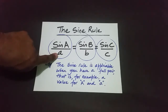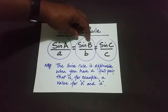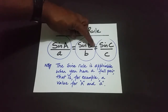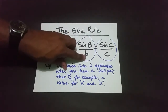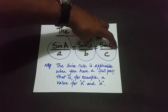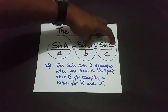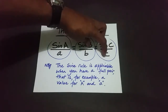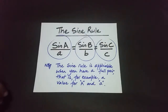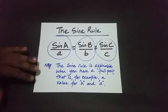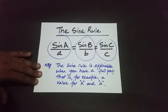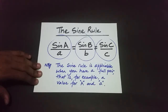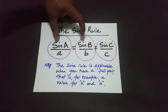We have three pairs because we deal with a triangle. This would be the angle at vertex A, and the side opposite that vertex is little a — the length of that side. Then vertex B and the opposite side is little b, and vertex C with the opposite side being little c.